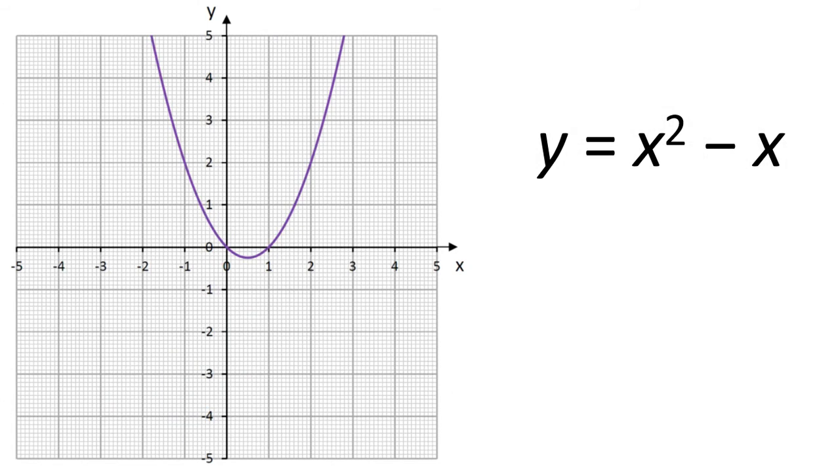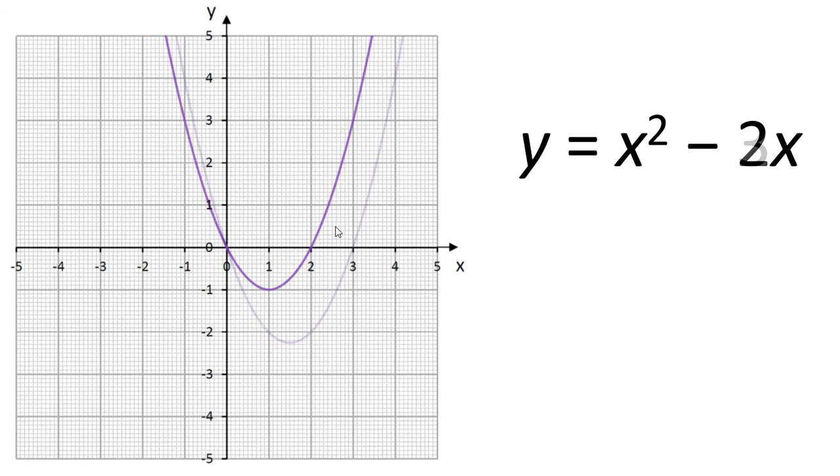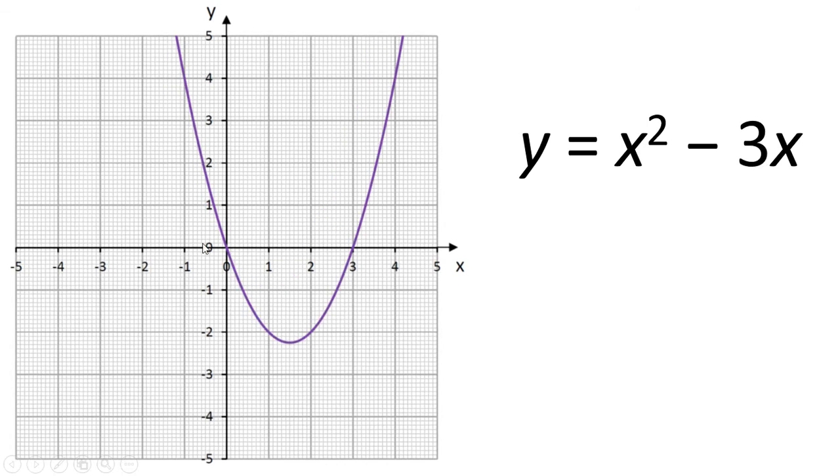If we subtract x, then the curve that we've got for our quadratic equation gets shifted to the right and down. And if we take away 2x, 3x, it continues to be shifted down and to the right.